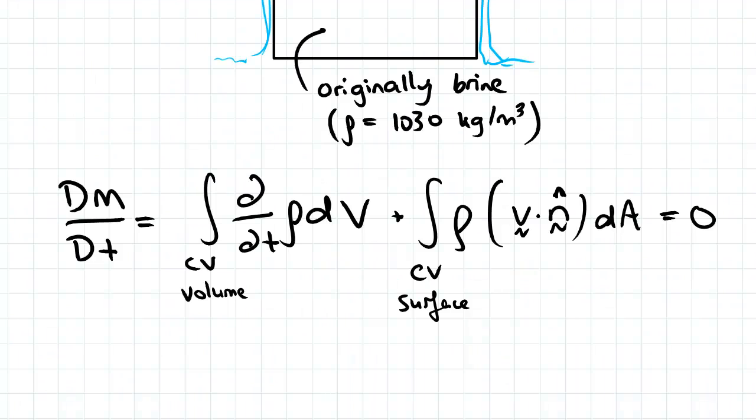Before we carry out the equation we need to define our densities, since we're dealing with multiple here: we've got the density of the fresh water and the density of the brine. So the density of the fresh water I'm going to denote as ρf.